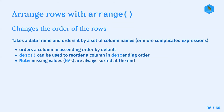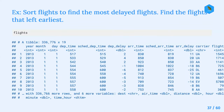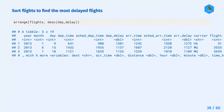A note: missing values are always sorted at the end. The next exercise asks us to sort flights to find the most delayed flights, and then find the flights that left the earliest. Here's another snapshot of the dataset.